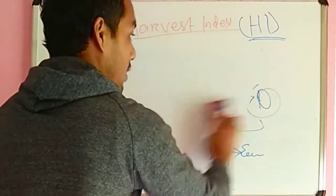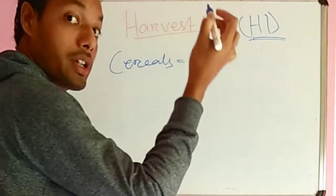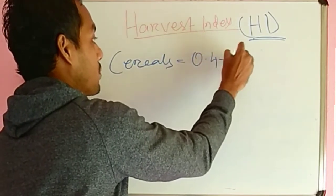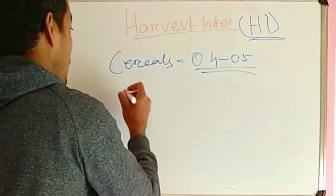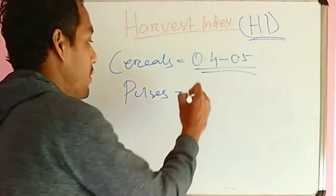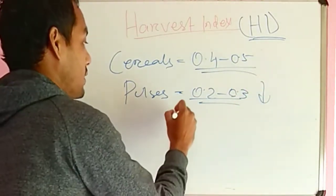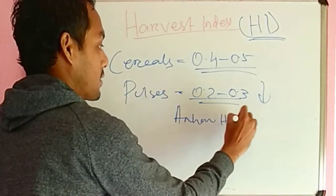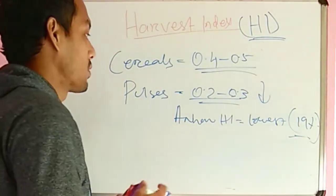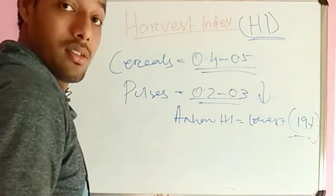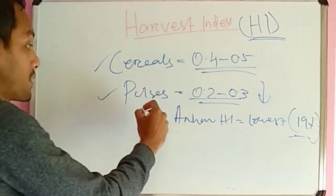In case of cereals like rice and wheat, the harvest index varies from 0.4 to 0.5. In case of pulses it is around 0.2 to 0.3, which is quite lower. In case of RR (jute/sugarcane root residues), the harvest index is the lowest, around 19%. From an exam point of view, remember: cereals 0.4–0.5, pulses 0.2–0.3, and RR is the lowest.